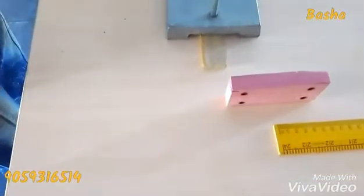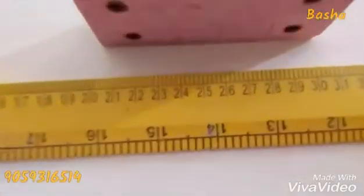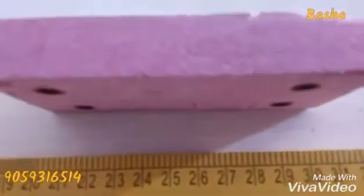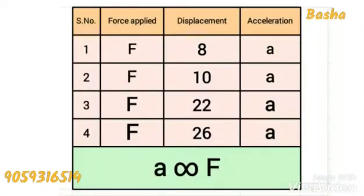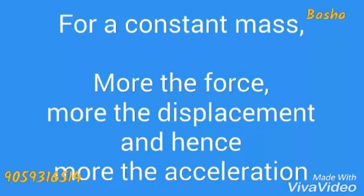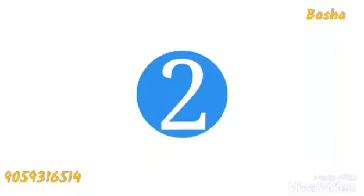Much heavier than the previous one. Each time the size of the bob is increased and hence force applied is increased. The corresponding displacement shows that the acceleration is increased. So the conclusion is: acceleration is directly proportional to the force applied. For a constant mass, more the force, more the displacement, and hence more the acceleration.